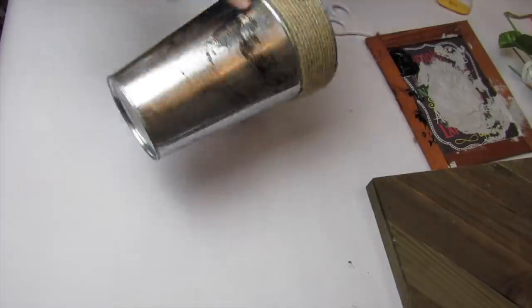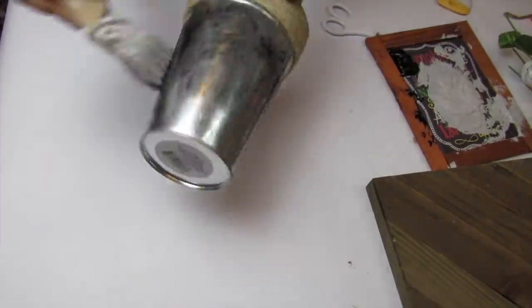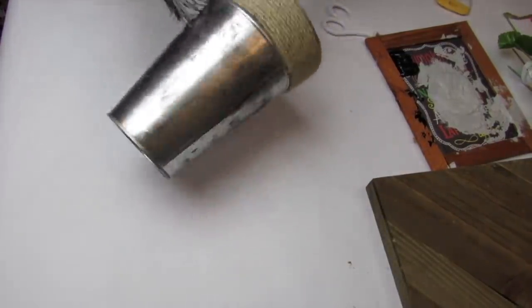Taking the Folk Art chalk paint in Rich Black, I'm just going to muddy up this piece. I just wanted it to look a little more aged, so I'm just going to do a mixture of dry brushing and kind of smudging the paint just to give it a little bit more of a worn look.